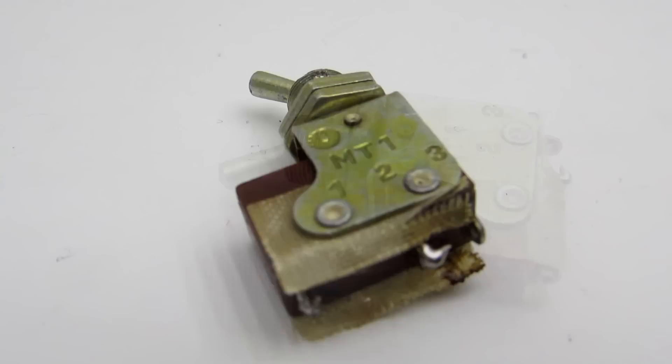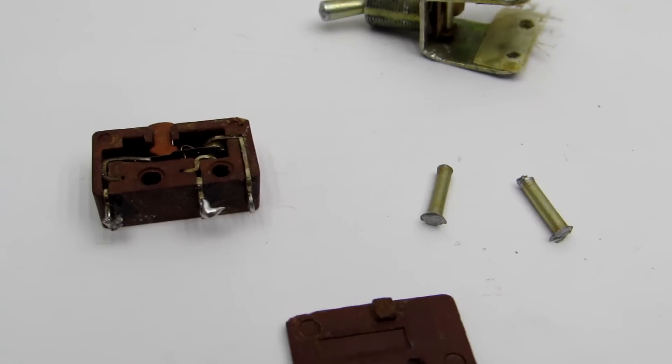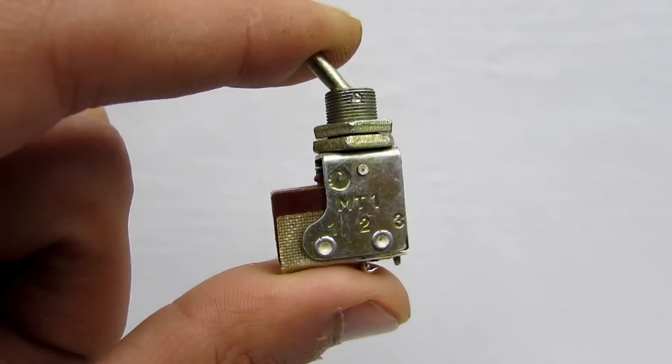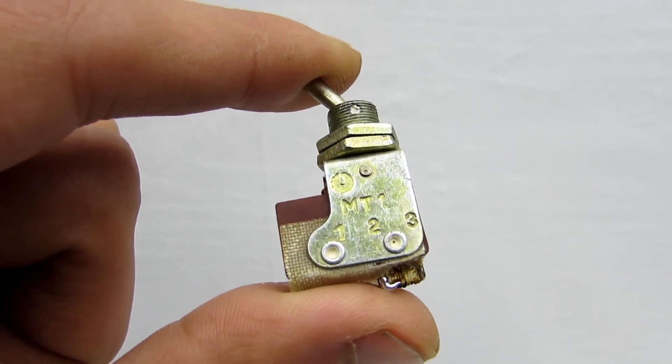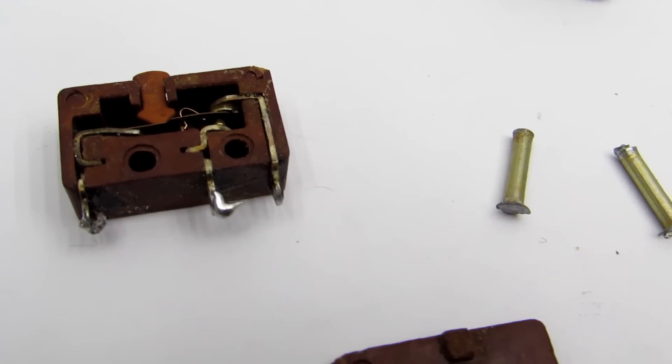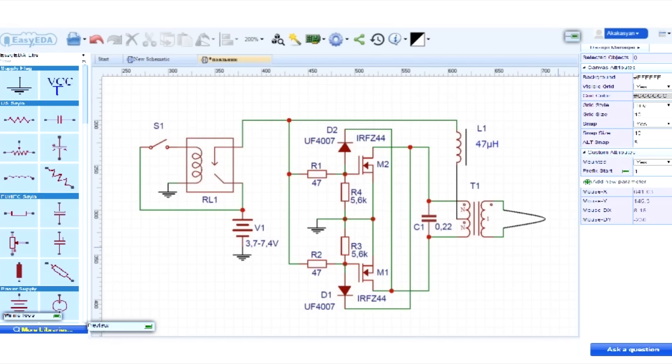The popular MT1 switch was used, but I dismantled it. In the datasheet, this button can switch up to 4 amperes, but actually two times more. At first, I wanted to use a low power button and relay, but I did not find a relay with low voltage coil among my components.